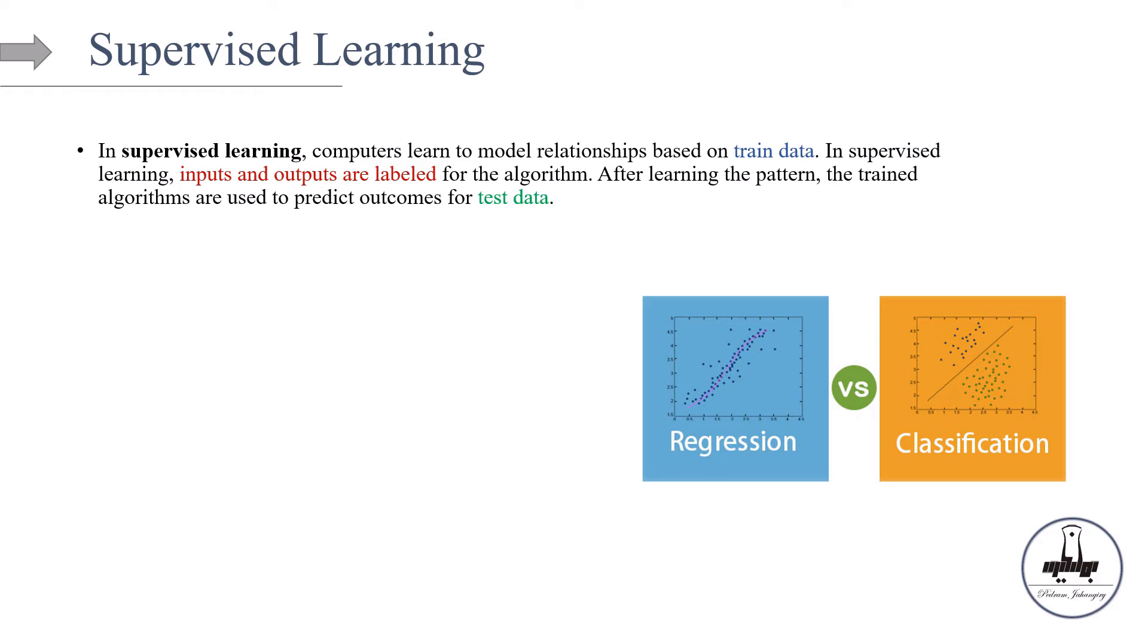OK, starting with supervised learning, what kind of models we have and what are the examples? In supervised learning, computers learn to model relationships based on train data. This is important. And the inputs and outputs as already discussed are labeled for the algorithm. After learning the pattern, the trained algorithms are used to predict outcomes for the test data.